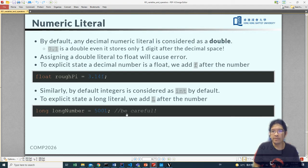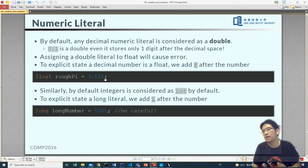By default, any decimal numeric literal is considered as a double. So for example this one, 0.1, will be treated as a double even though storing one digit out of the decimal space could be easily done with a float. And when you assign a double literal to a float it will cause an error. So if you want to assign a value to a float you have to explicitly state that this decimal number is a float. To do it we add an F after the number. So for instance 3.14F, that will make the computer know we want to store this number 3.14 using float format. And then this float will be assigned to the variable.